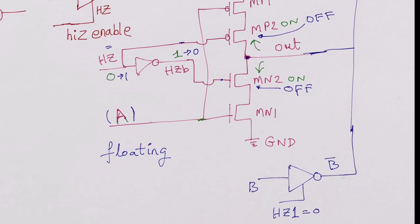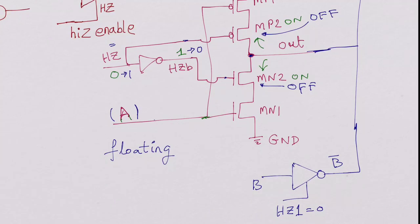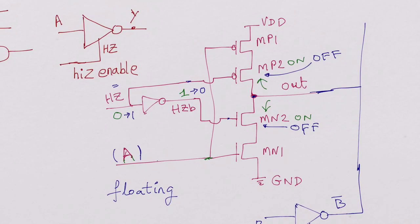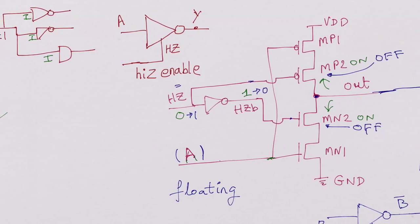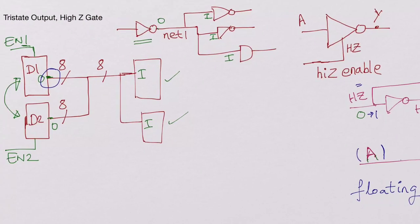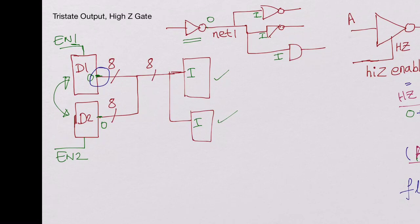So this is how a tri-state inverter or tri-state gate works and how the conflict is resolved so that two devices will not drive the same bus at the same time.